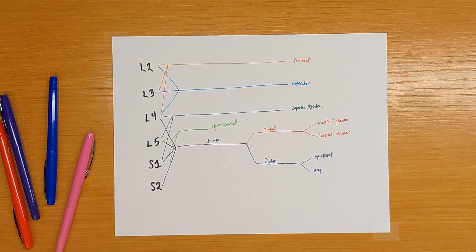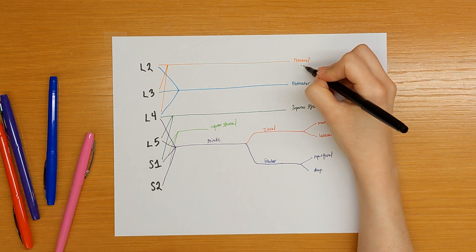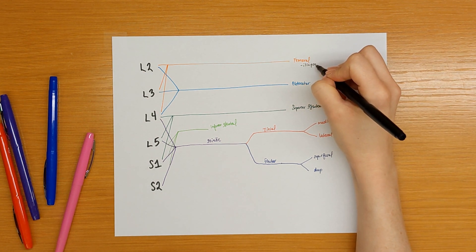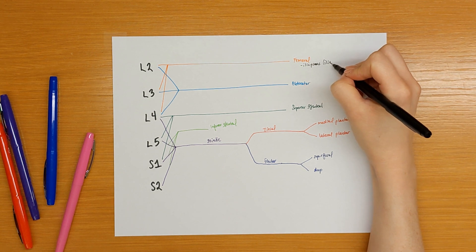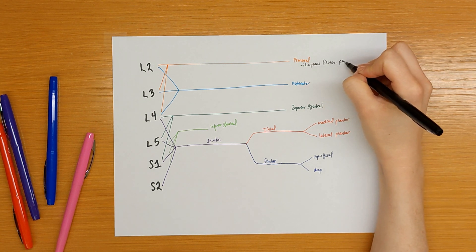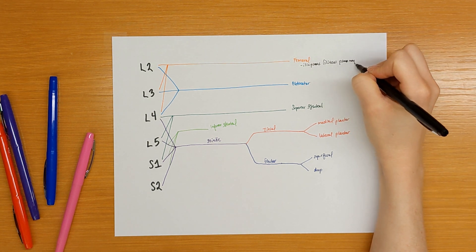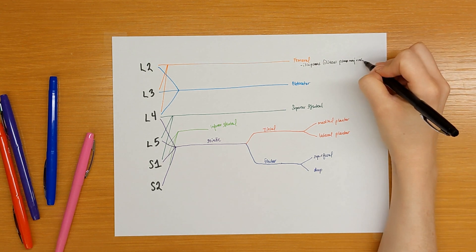Now let's add our muscles. The femoral nerve innervates the iliopsoas which is actually three muscles, the iliacus, psoas major and psoas minor.